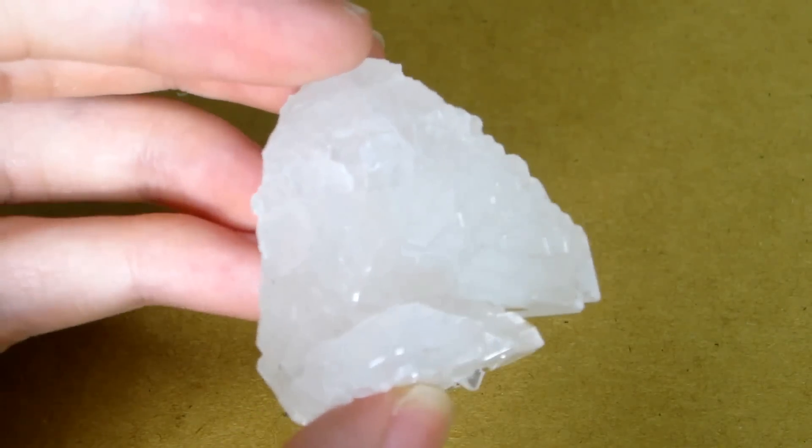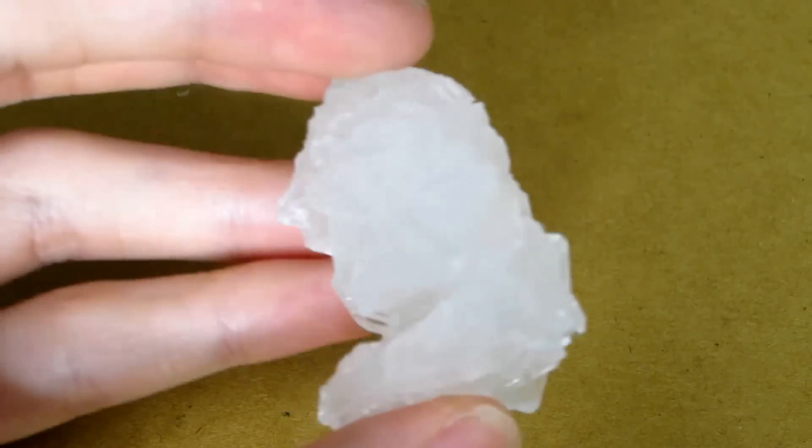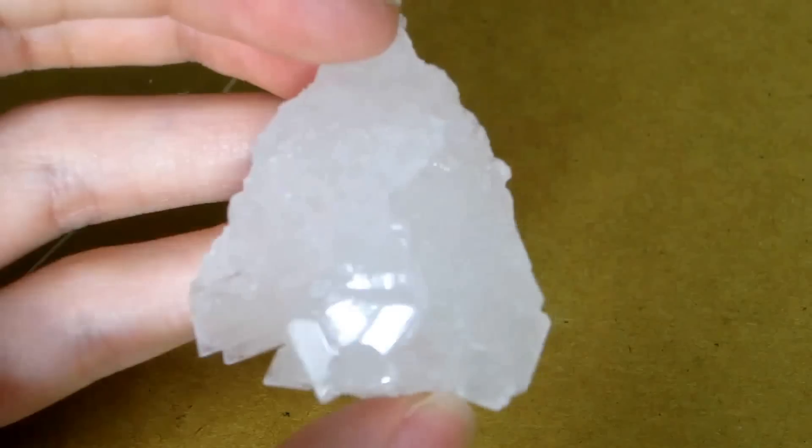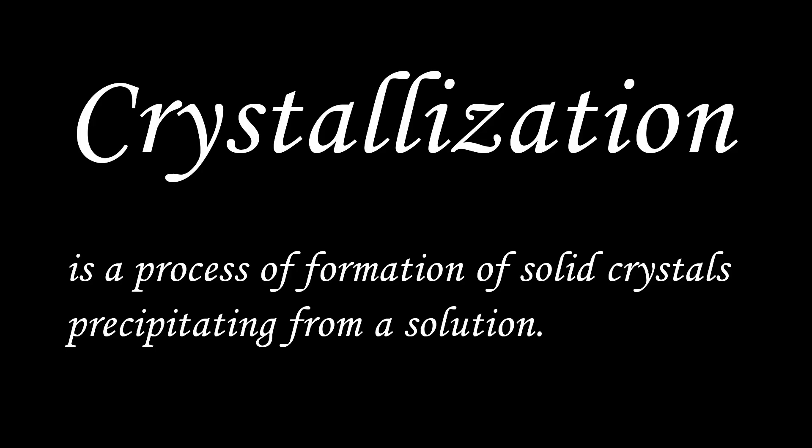Today we are going to grow alum crystal, but the following steps are almost the same as growing copper sulfate crystal. Crystallization is a process of formation of solid crystals precipitating from a solution.